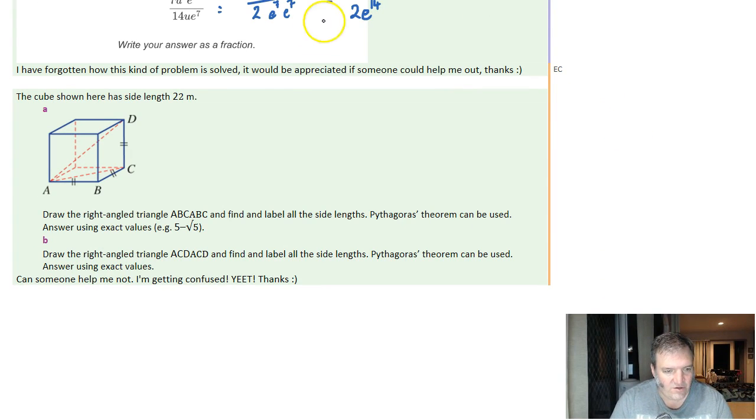Let's have a look at the next one. Cube here has a length of 22. Draw the right-angled triangle ABC. I don't know why they wrote it twice. ABC is there. Find and label all side lengths. So cube has a side length of 22, so that side's going to be 22, that's going to be 22.